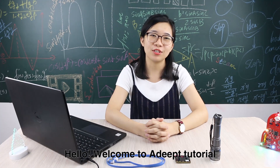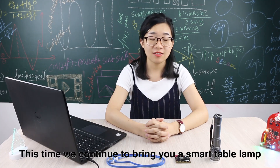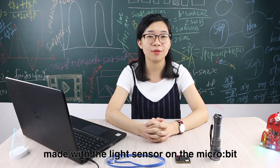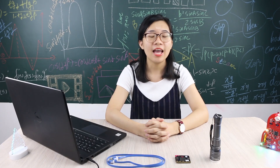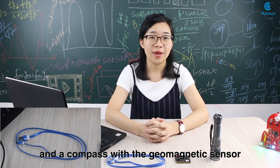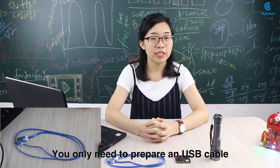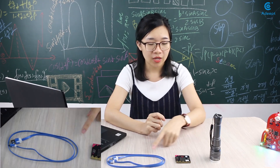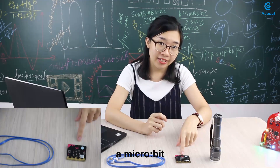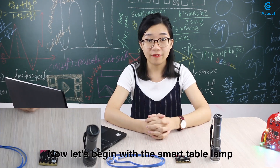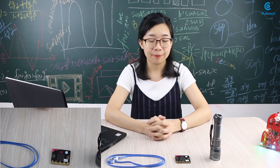Hello, welcome to this Adobe tutorial. This time we continue to bring you a smart table lamp made with the light sensor on the micro:bit, and a compass with the geomagnetic sensor. You only need to prepare a USB cable, a micro:bit, and a flashlight. Now let's begin with the smart table lamp.